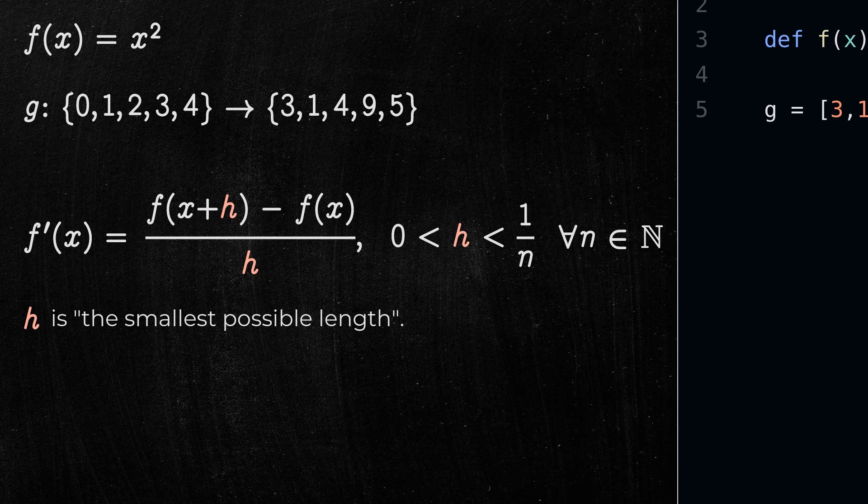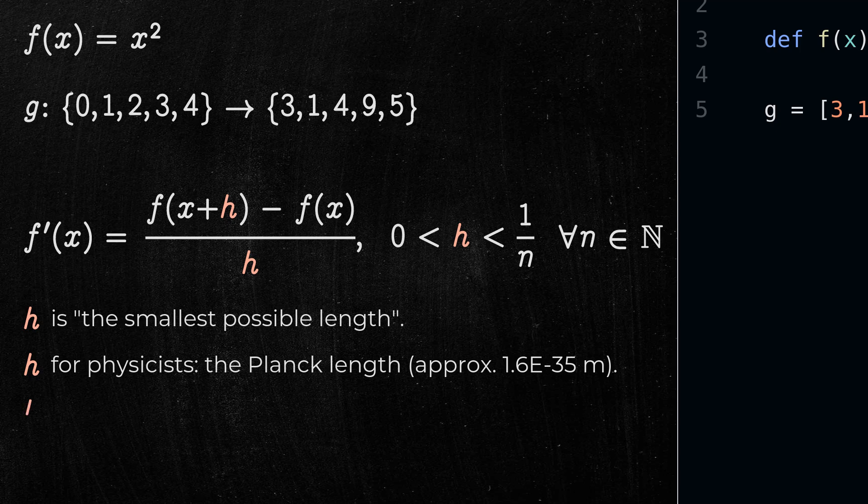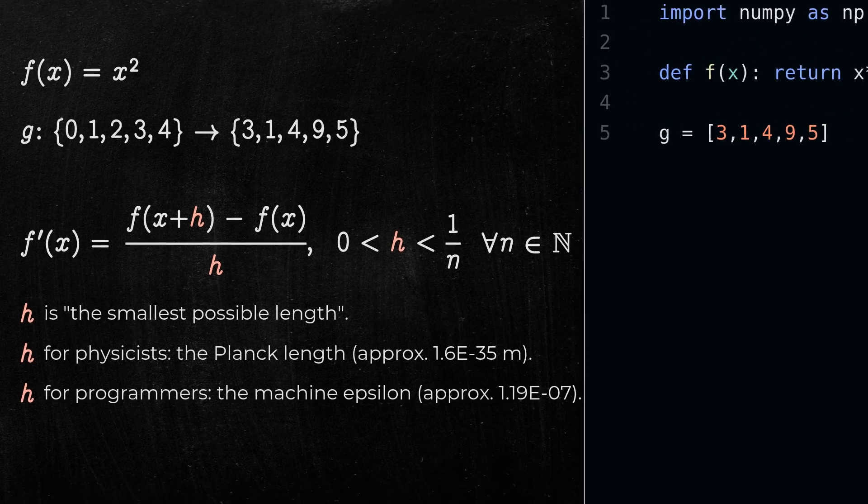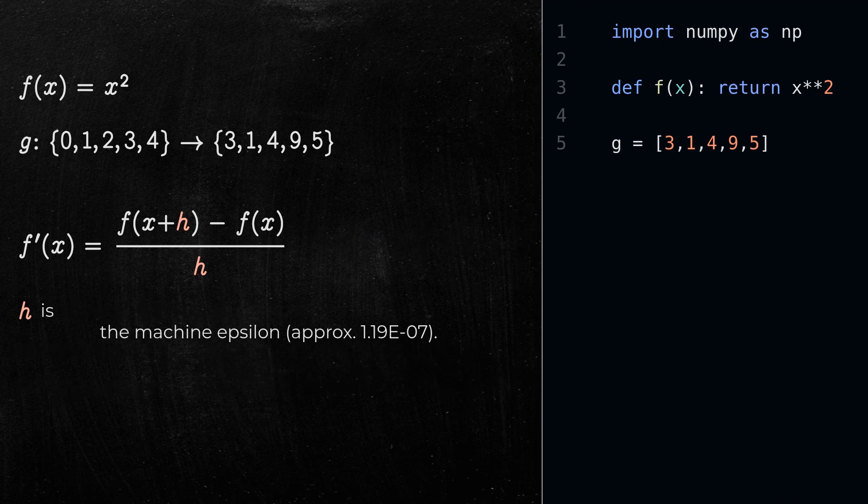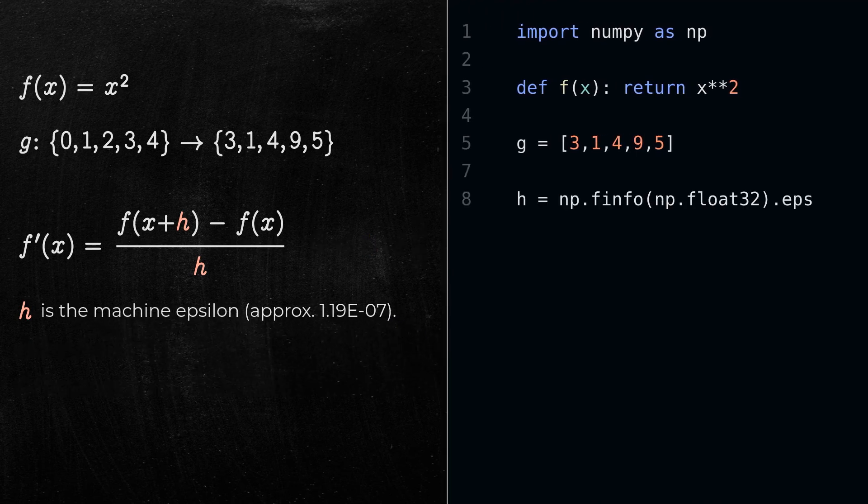Perhaps for physicists, the Planck length is a good candidate. For programmers, a reasonable value would be the machine epsilon. So, let's declare that h is equal to this number. Now we can write a derivative function as follows.